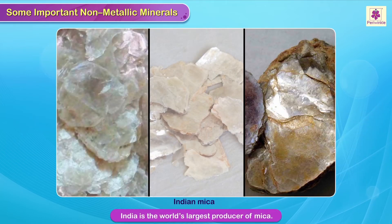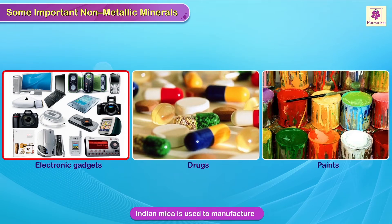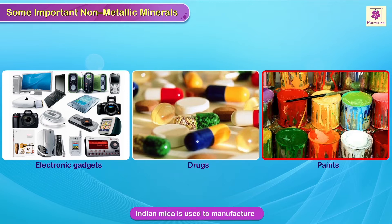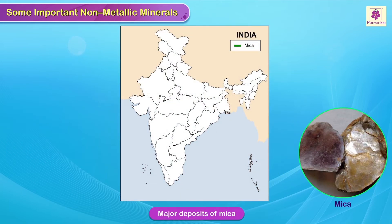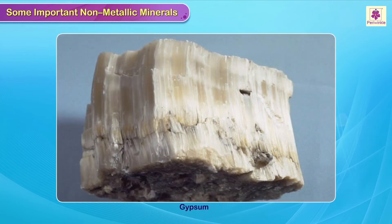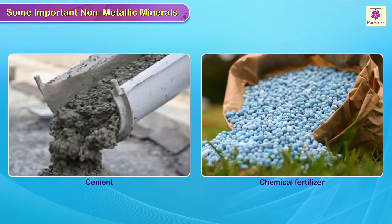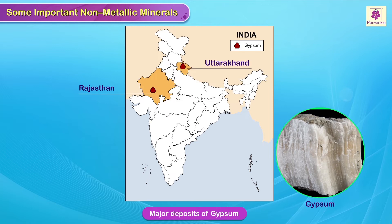India is the world's largest producer of mica. Indian mica is mainly used in manufacturing electronic gadgets, drugs, paints, etc. Huge deposits of mica are found in Andhra Pradesh, Jharkhand, Bihar and Rajasthan. Gypsum, a non-metallic mineral, is used to make cement and chemical fertilizers. States such as Rajasthan, Uttarakhand and Tamil Nadu have abundant gypsum deposits.